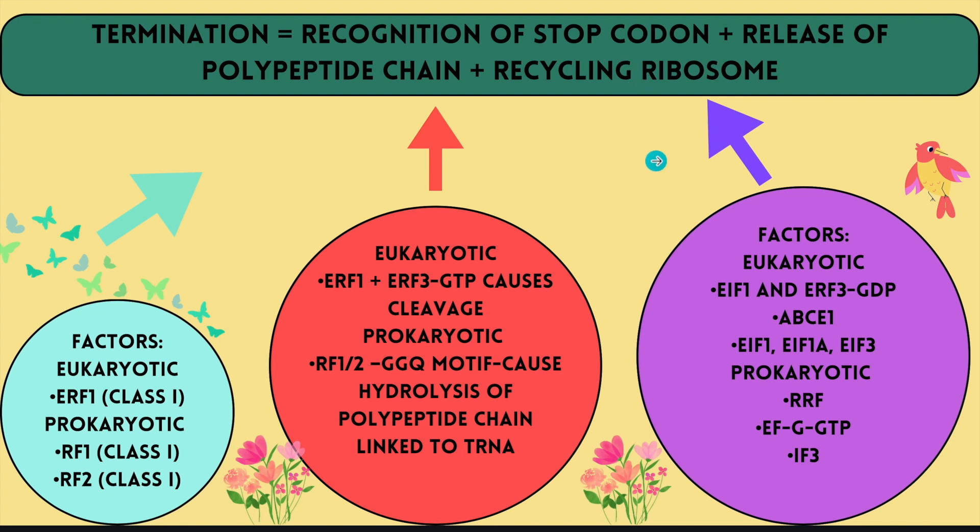Lastly, for ribosome recycling: eukaryote uses eIF1, eRF3-GTP, and ABCE1.